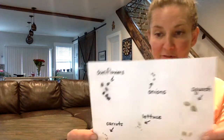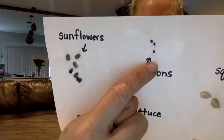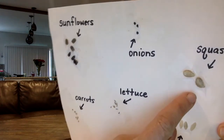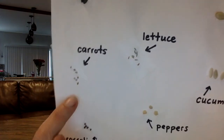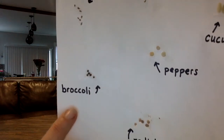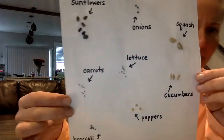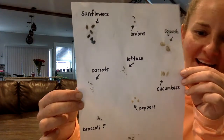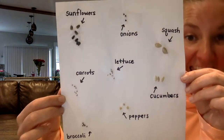I have a bunch of seeds that I am planting in my garden, and I wanted to show you the different ones I have. We have sunflowers, onion, squash, cucumbers, lettuce, carrots, pepper, broccoli, and radish. Do they look the same? No, they're all different — different colors, sizes, and shapes.